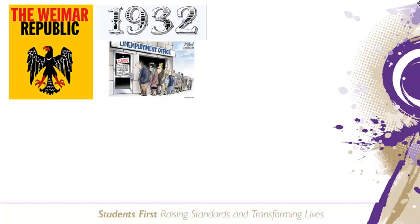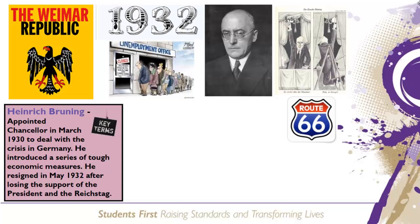As 1932 began, the Weimar Republic was crippled by economic problems. The Chancellor, Heinrich Brüning, was struggling to make the constitution of the republic work. The Reichstag didn't meet very often and Brüning relied increasingly on Article 48 to pass laws. Remember, this was meant to be an emergency power, but Brüning used it 66 times in 1932 alone.